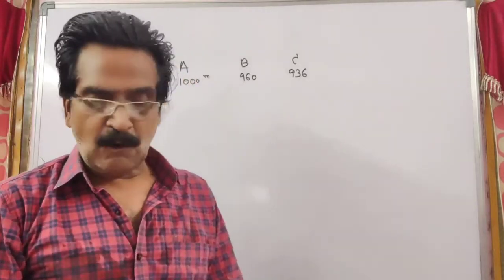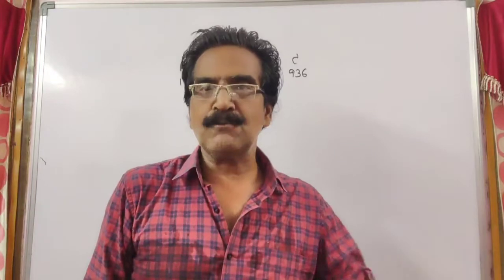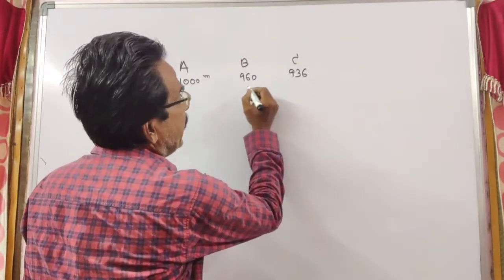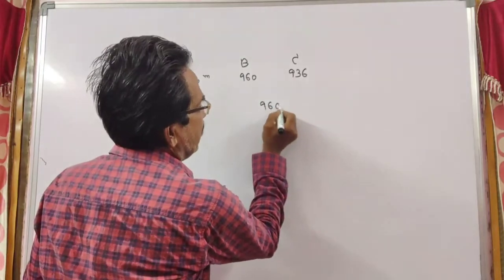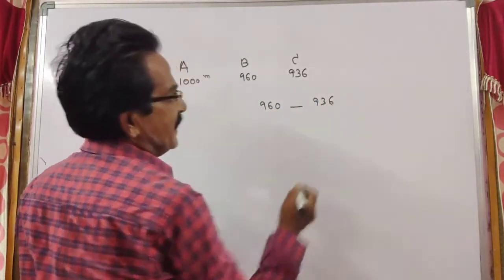See, here the question is how many meters start can B give C? See, if B runs 960 meters, C runs only 936 meters.